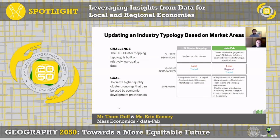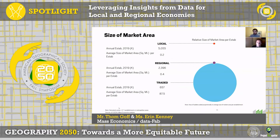The next slide highlights how regional is a distinct market area between traded and local. Traded, as you can see, has a huge market area — over 200 times the size of the regional circle, operating mostly at the MSA or multi-state regional level. The regional market area in turn is about 2 times the size of the local market area, which really covers a lot of neighborhood-level industries like bodegas that we see across almost everywhere in the US.